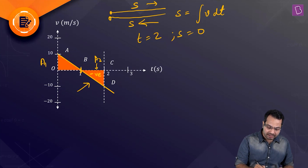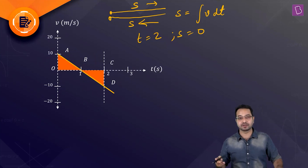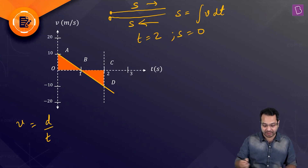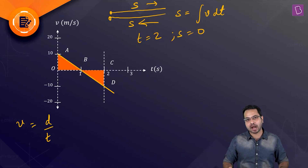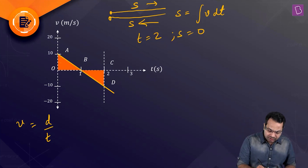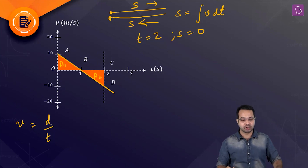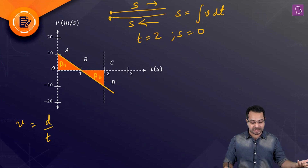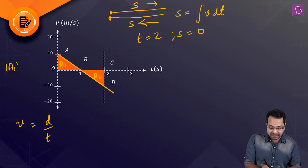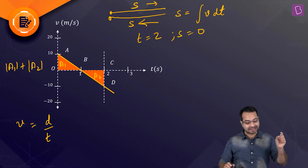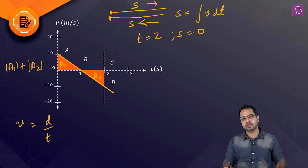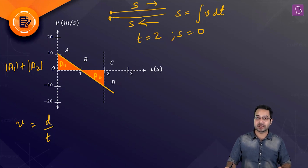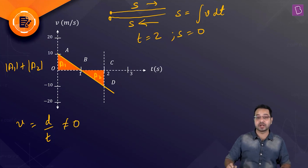Now let's consider the average speed. Speed equals distance divided by time, and distance is a scalar — it does not depend on direction. So we take the magnitude of area A1 plus the magnitude of area A2 as the total distance. That is clearly not zero. So the average speed in the first two seconds is not zero, ruling out that option.